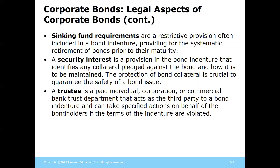Covenants may also include collateral like inventory pledged as a security interest, and there might be an independent third party whose job it is to make sure bondholders' interests are properly represented in decision-making processes — someone overseeing payments and communications with the company regarding the bonds.